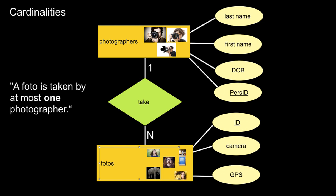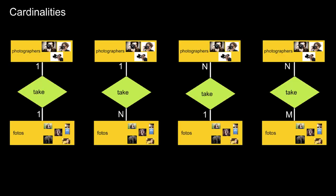So to summarize: photographers take an arbitrary number of photos; photos are taken by at most one photographer — that's what this entity relationship model in Chen notation is saying. You have four possible combinations: one-to-one, one-to-N, N-to-one, and N-to-M.